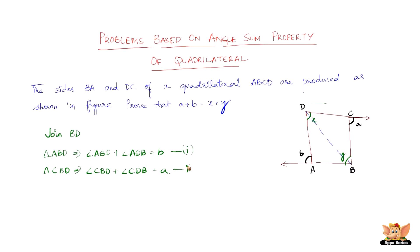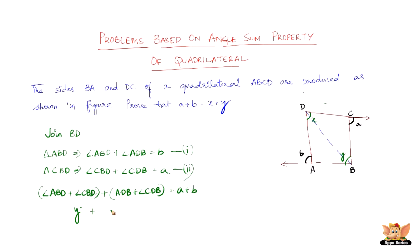Let us take these as equation 1 and equation 2. Adding equations 1 and 2, we get angle ABD plus angle CBD plus angle ADB plus angle CDB equals A plus B. Now, angle ABD plus angle CBD equals X degrees, and angle ADB plus angle CDB equals Y degrees. Therefore, Y plus X equals A plus B, which is X plus Y equals A plus B. Hence proved.